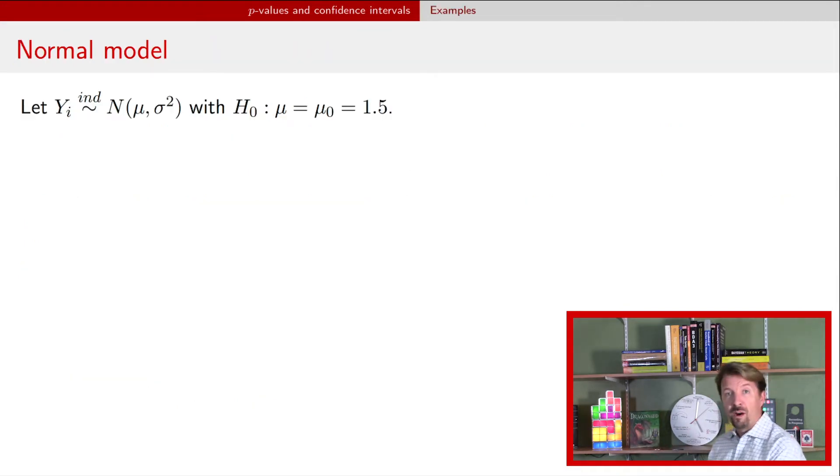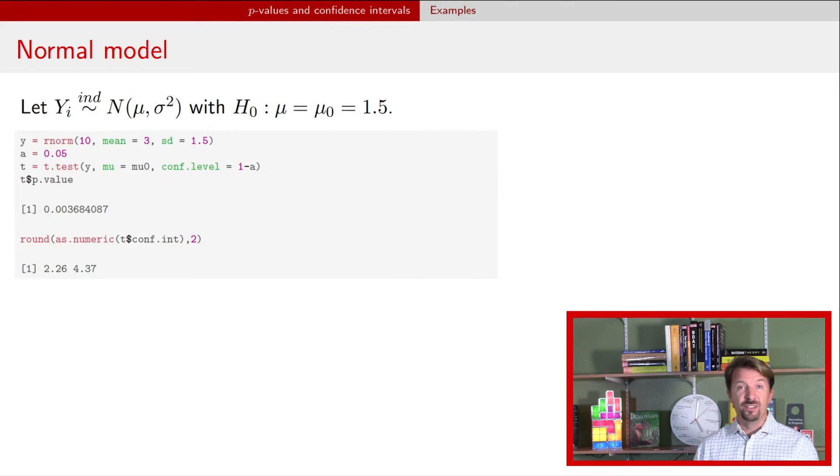So let's go with the normal model with the t-test. Here we're going to test the mean is equal to 1.5. We can do that in R using the t.test function. Here in R we've decided that we're going to use a significance level of 0.05, our standard significance level. And we see this p-value, the p-value is about 0.03. So the p-value is less than that significance level α. And now if we look at the confidence interval output here, we get the values about 2.26 and 4.37. And that interval does not contain the hypothesized value 1.5. That hypothesized value 1.5 does not contain it. And we knew that because the p-value is less than the significance level.